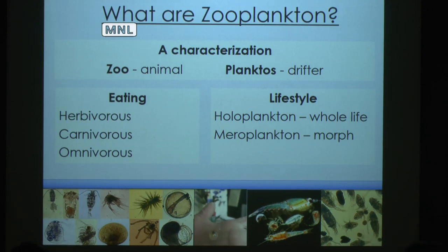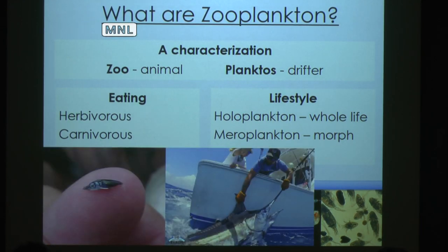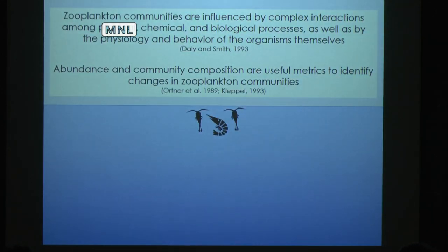They can live their entire lives as zooplankton, such as copepods, or many animals — such as commercially and recreationally important fishes like marlin — start off as plankton and graduate out, or morph, into a nektonic phase. Zooplankton communities are influenced by a variety of complex interactions with the physical, chemical, or biological environment, as well as the physiology and behavior of the animals themselves.